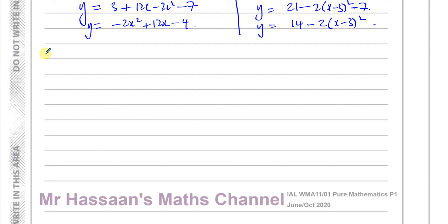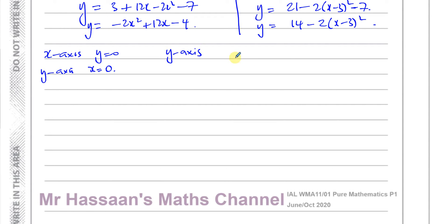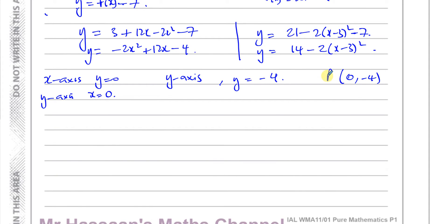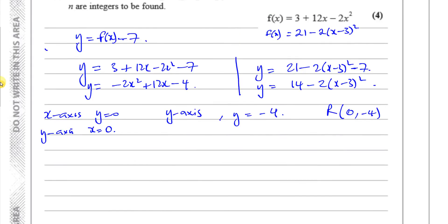The graph crosses the x-axis when y = 0, and crosses the y-axis when x = 0. Let's find where it crosses the y-axis first — that's easiest from the expanded form. When x = 0, y = -4. So the coordinates where it crosses the y-axis are (0, -4), and that is the point R.